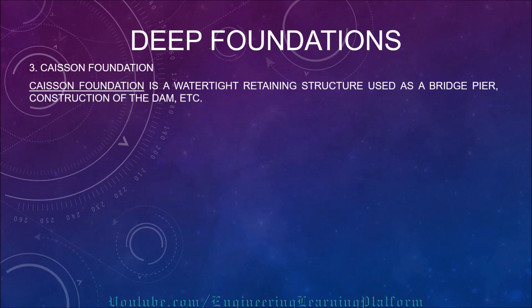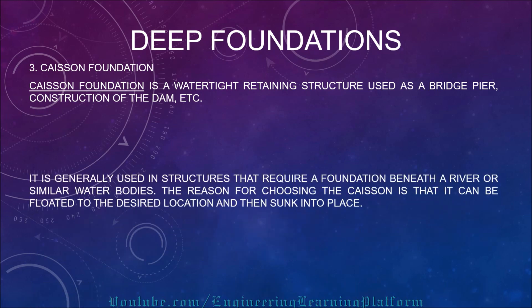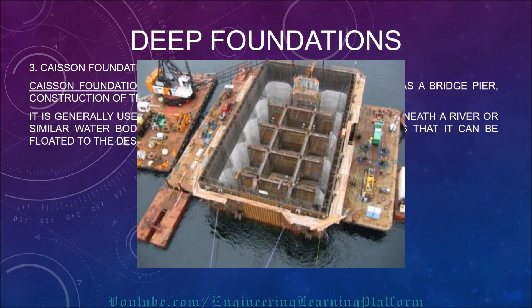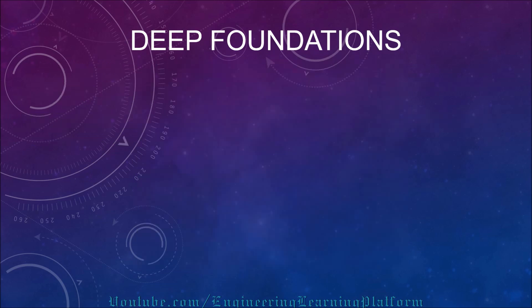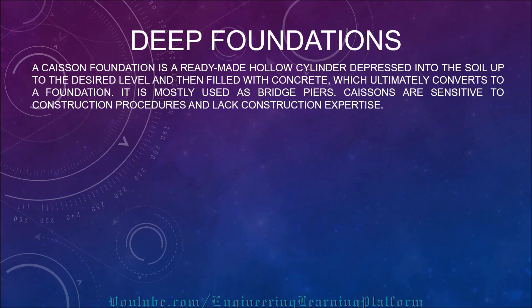The third type of deep foundation is caisson foundation. Caisson foundation is a watertight retaining structure used for bridge pier construction, dams, etc. It is generally used in structures requiring a foundation beneath a river or similar water body. Caissons can be floated to the desired location and then sunk into place — for example, used in oil decks, underground structures, or water-retaining facilities. A caisson foundation is a ready-made hollow cylinder pressed into the soil to the desired level and then filled with concrete, converting into a foundation. It is mostly used as bridge piers. Caissons are sensitive to construction procedures and lack construction expertise in many parts of the world.